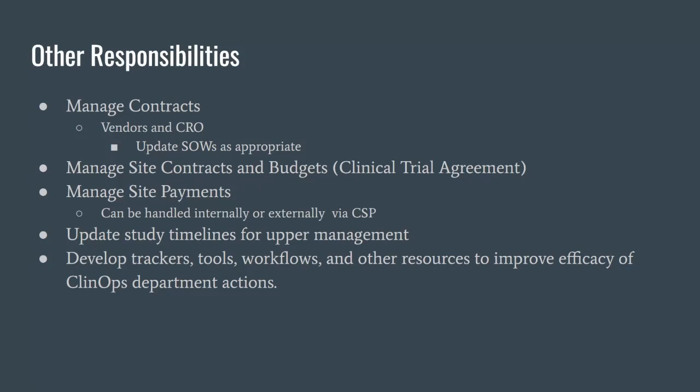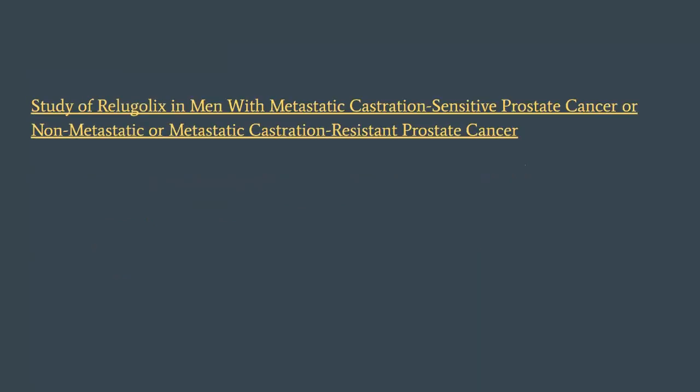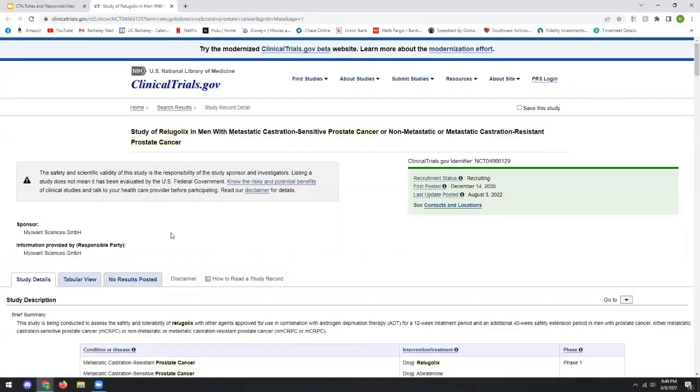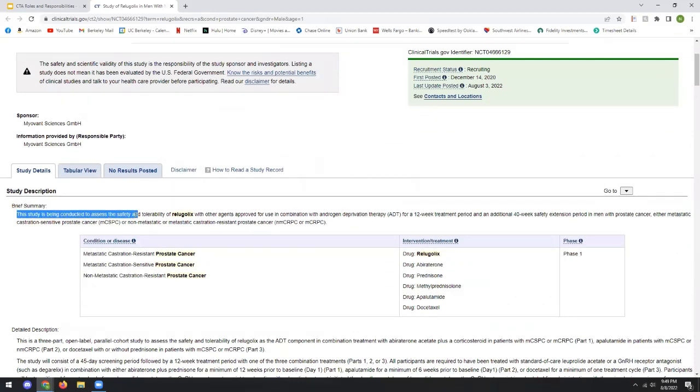Lastly, a catch-all responsibility: developing trackers, tools, workflows, and other resources to improve the efficiency of the clinical operations department. Sometimes a director or manager will say a process isn't working well and ask you to develop a new one. That requires critical thinking — identifying where inefficiencies exist and building a better system step by step.